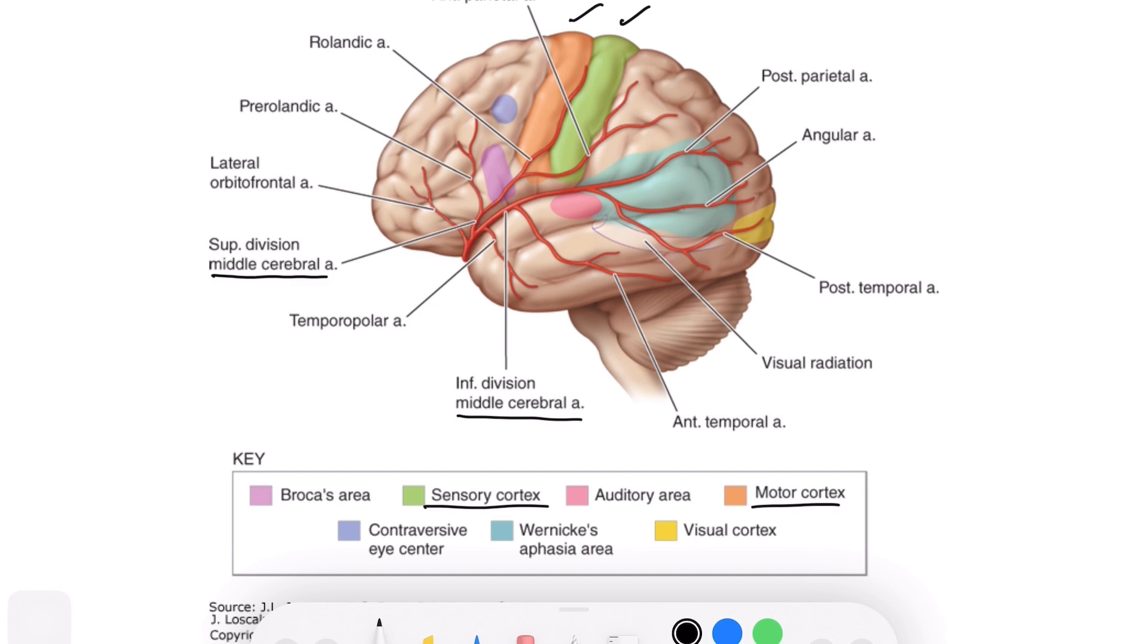Also, if you see here, the visual radiation receives supply from a branch of the MCA. Thus, if the visual radiation area is affected, you will see homonymous hemianopia.